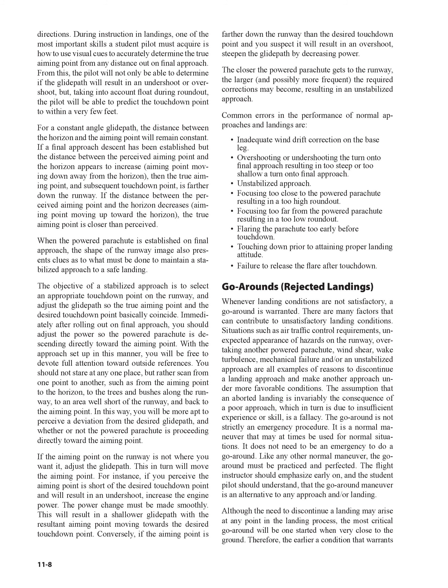Go-Arounds / Rejected Landings: Whenever landing conditions are not satisfactory, a go-around is warranted. Situations such as air traffic control requirements, unexpected appearance of hazards on the runway, overtaking another powered parachute, wind shear, wake turbulence, mechanical failure, and/or an unstabilized approach are all examples of reasons to discontinue a landing approach. The assumption that an aborted landing is invariably the consequence of a poor approach due to insufficient experience or skill is a fallacy. The go-around is a normal maneuver that may at times be used for normal situations — it does not need to be an emergency. Like any other normal maneuver, the go-around must be practiced and perfected.